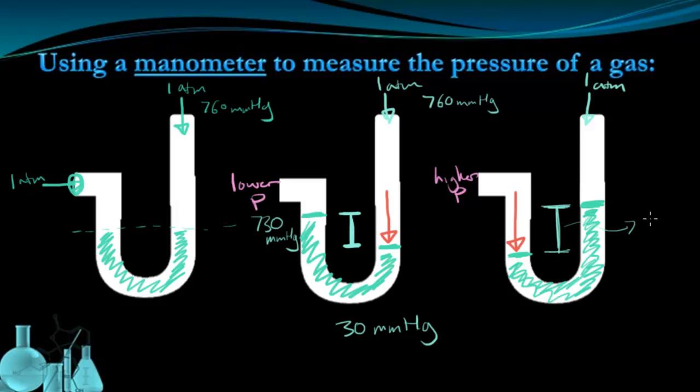Let's say this one is 50 millimeters difference. That means the pressure of the high pressure area over here is 50 millimeters higher than the standard pressure coming in.